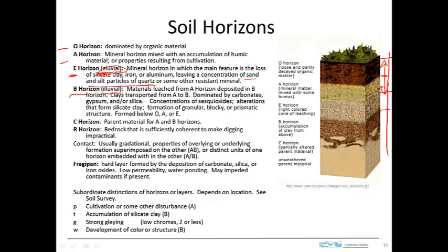The clays removed from the E horizon are moved downward and accumulated in the B horizon. The illuvial process — I-L-L-U-V-I-A-L — is the process of accumulation of clays. So the B horizon has a relatively high clay content, particularly compared to the E horizon. There's also a structure to these soils typically, with a couple of options: granular, blocky, or prismatic structure. I'll show you examples of those different structures later.